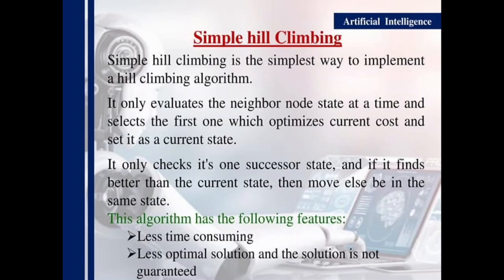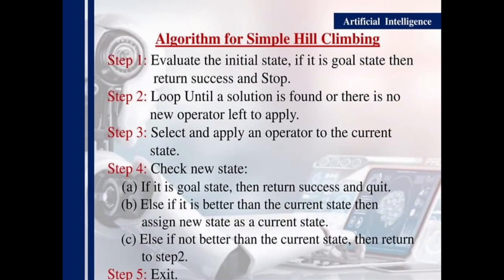Simple hill climbing is the simplest way to implement a hill climbing algorithm. It only evaluates the neighbor node state at a time and selects the first one which optimizes the current cost and sets it as the current state. It only checks one successor state, and if it finds a better state than the current state, it moves; otherwise, it remains in the same state. This algorithm has the following features: less time consuming, less optimal solution, and the solution is not guaranteed.